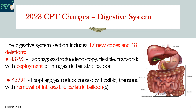We will see 2 important new codes: 43290 and 43291. Code 43290 is esophagogastroduodenoscopy, flexible, transoral, with deployment of intragastric bariatric balloon. Code 43291 is esophagogastroduodenoscopy, flexible, transoral, with removal of intragastric bariatric balloon. So 43290 is for deployment and 43291 is for removal — these 2 codes are new and important.